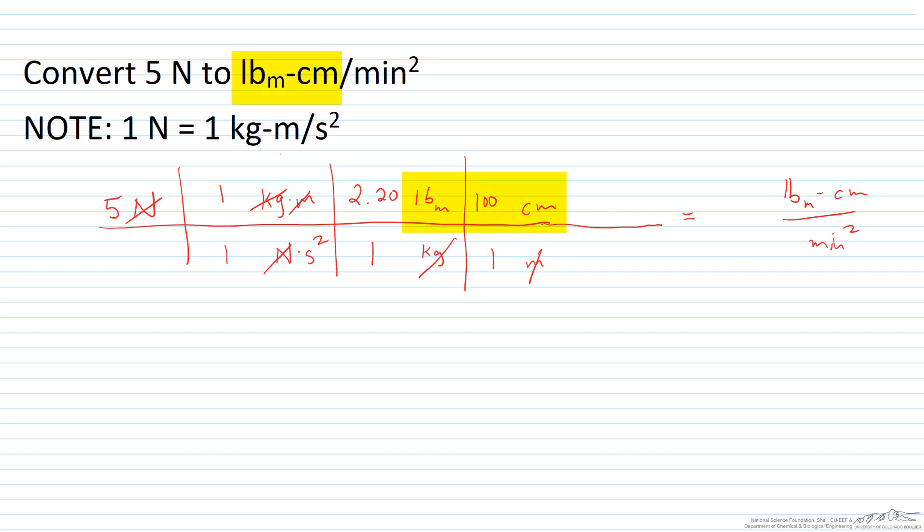And now I've got pound mass centimeters on the top, which is what I want. And now I have seconds squared on the bottom. So I'm going to actually do just two of the same here. I'm going to convert seconds to minutes. And there are 60 seconds per one minute. And I'm going to do that twice. So 60 seconds, one minute. So now I've got seconds in the numerator canceling with the two seconds in the denominator, and I've got my minutes squared in the bottom.